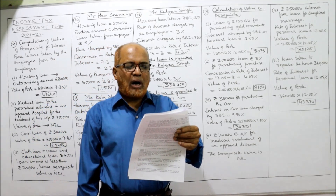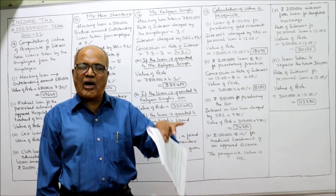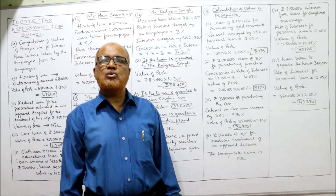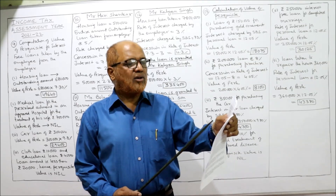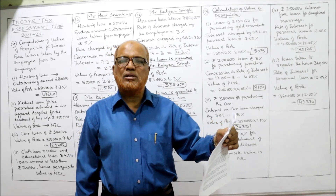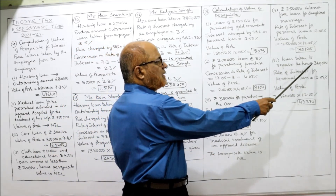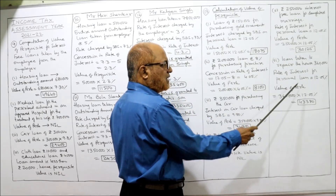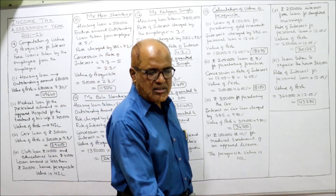Case 6: ₹3,60,000 for repair to house. Note: a loan for purchasing a house is called a housing loan, but a loan for repairing a house is called a personal loan. So the personal loan rate of 12.05% applies. Value of perquisite = ₹3,60,000 × 12.05% = ₹43,380. That is the value of the perquisite for Problem 13.